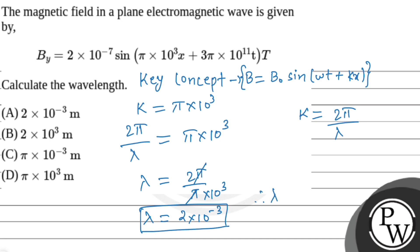Our final answer is wavelength lambda equals 2 into 10 to the power minus 3 meter. Option number A will be the correct answer. I hope you guys understood the concept very well. Thank you so much and all the very best.